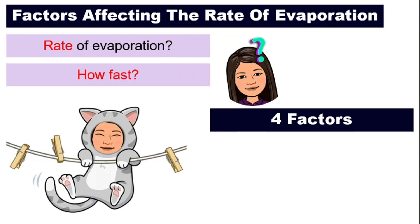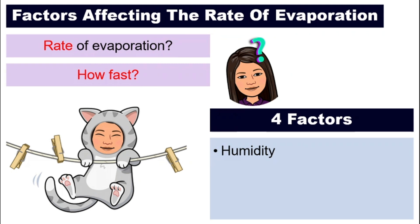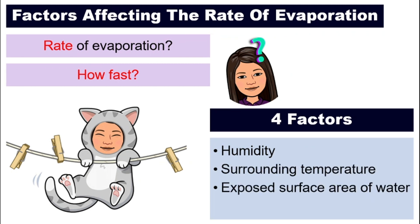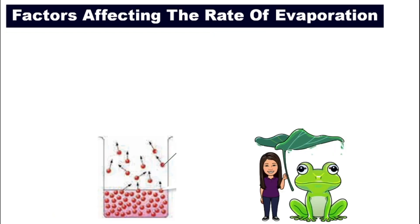What are some of the factors that affect how fast or how slow evaporation happens? There are actually four factors: number one, humidity; second, surrounding temperature; third, exposed surface area of water; and also movement of air. We will look at them one by one. Factor number one: humidity.